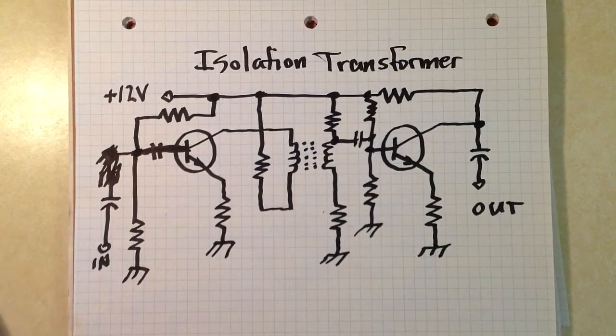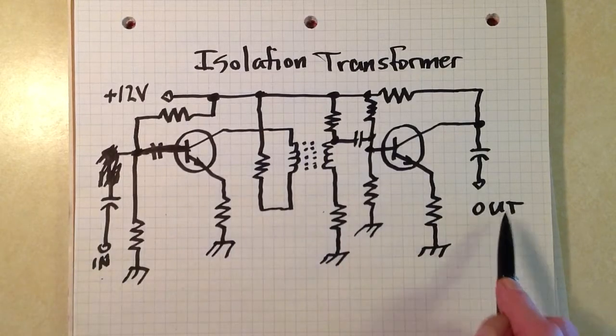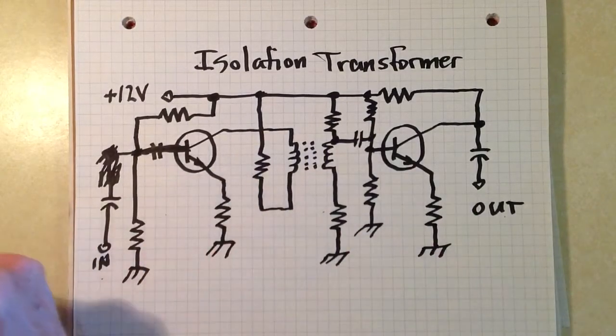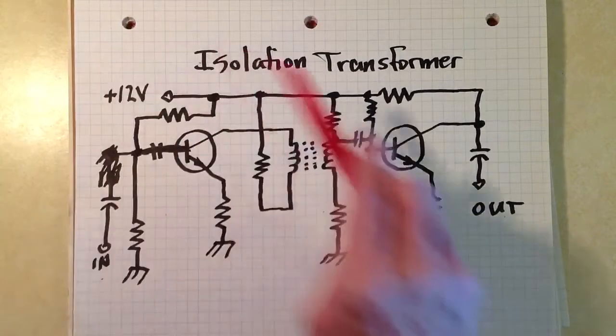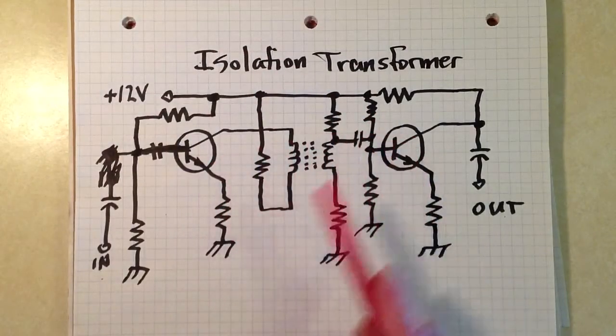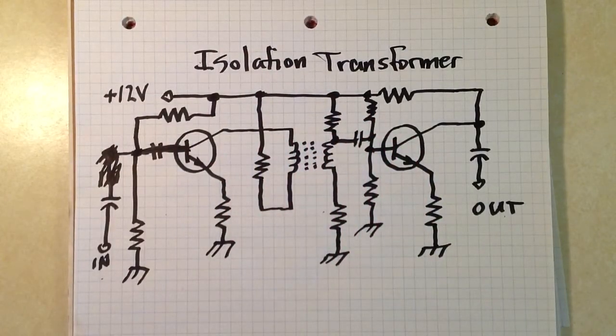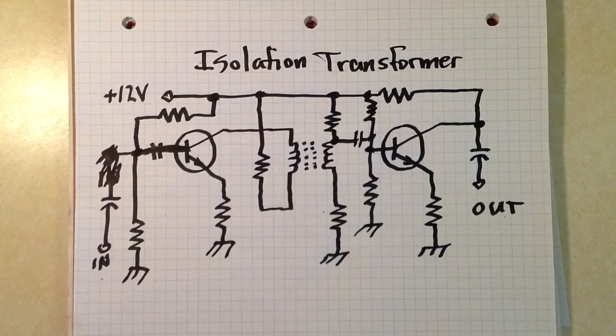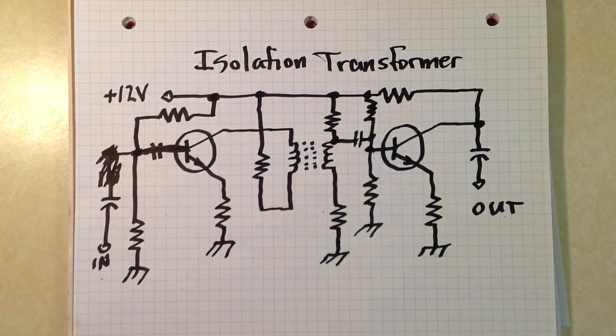The key here, here's the input and there's the output, two NPN bipolar transistors. How do we get the signal from one to the other? Well, we can use what is known as capacitive coupling or we can use transformer coupling.